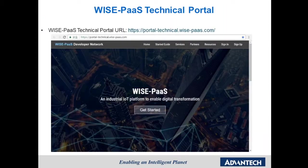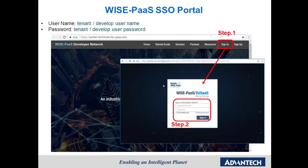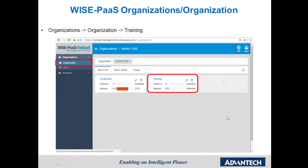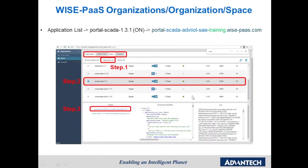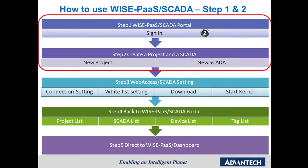Here is the WISE-PaaS Technical Portal. Click Sign In and you will be directed to the WISE-PaaS Single Sign-On portal — type your username and password and sign in. After you sign in, you can access your organization and space. Select one space and you will get the application list. Select the application list, then select Portal SCADA, and you will find the URL to access your SCADA portal. Let's describe these steps in detail.